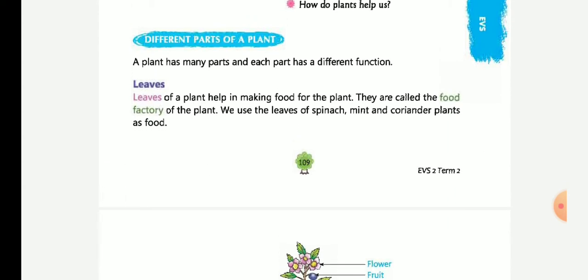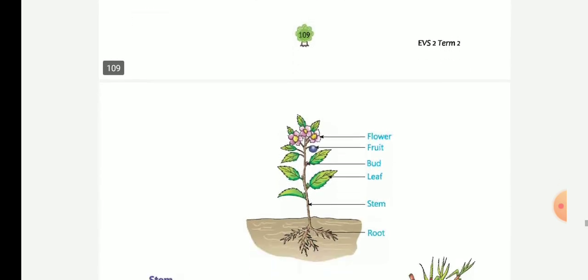There are different parts of plants and many parts that come together. Every part has a different function. The leaves of a plant help make food for the plant. They are called the food factory of the plant. We use the leaves of spinach, mint and coriander plants as food.